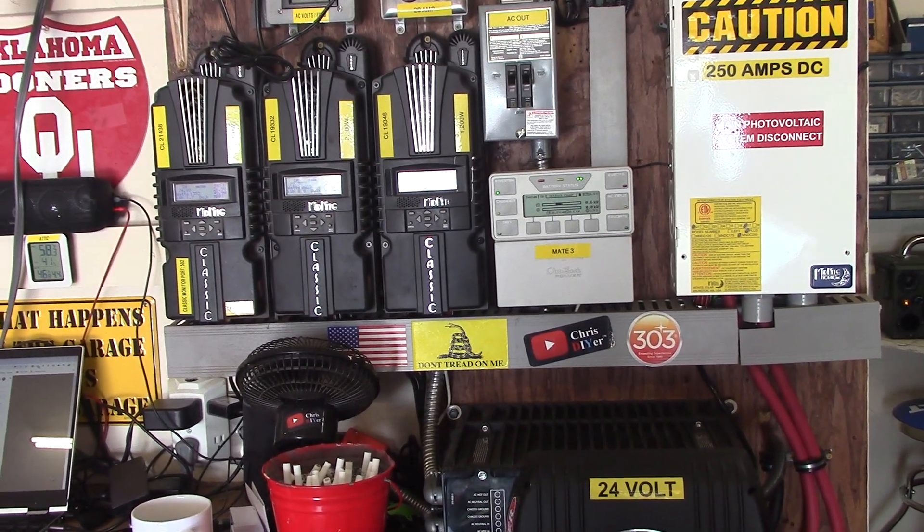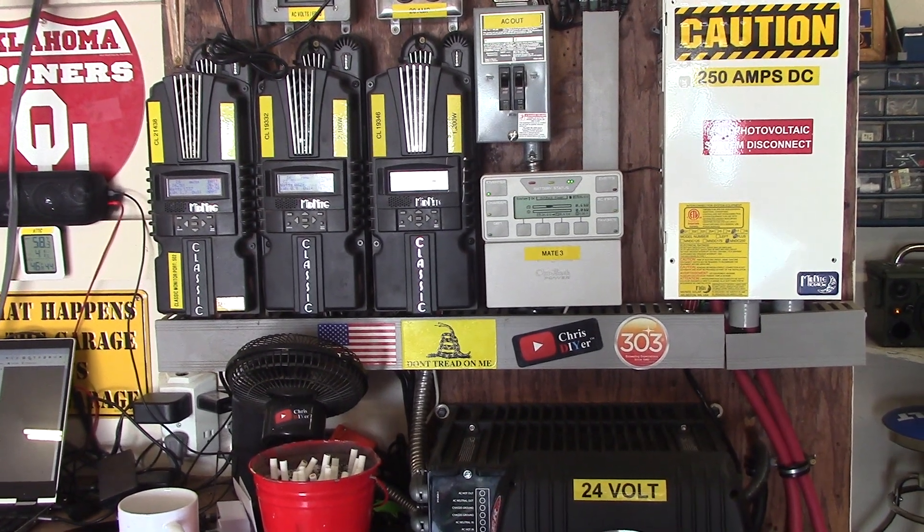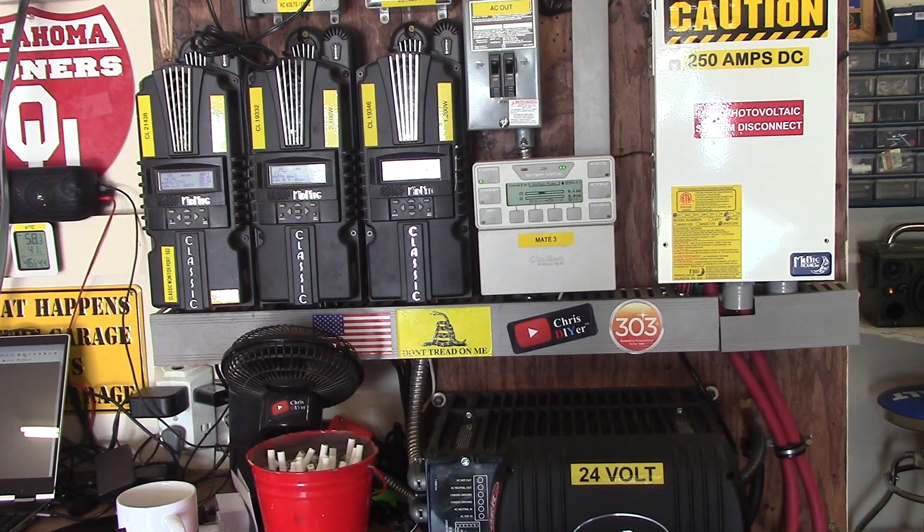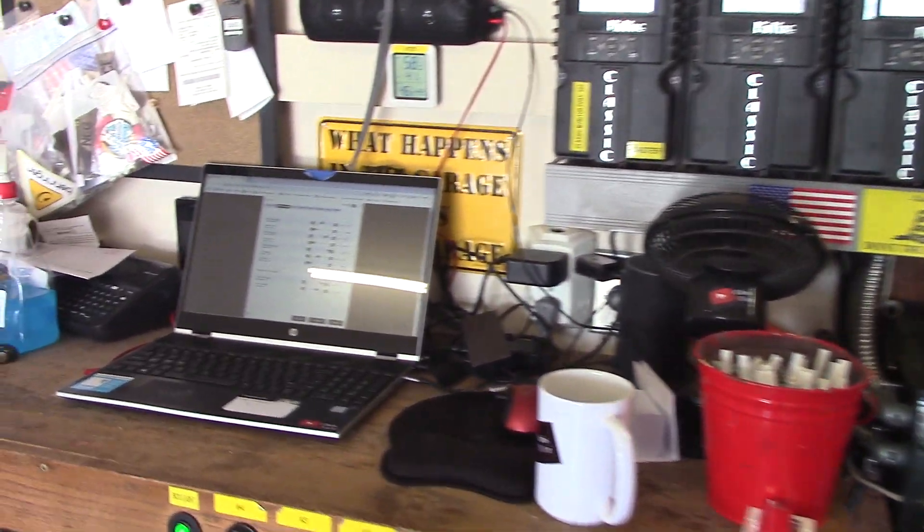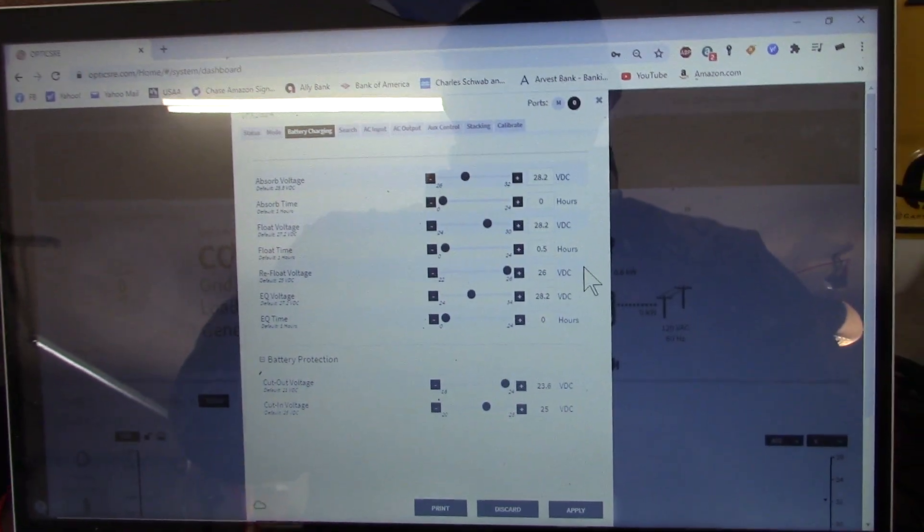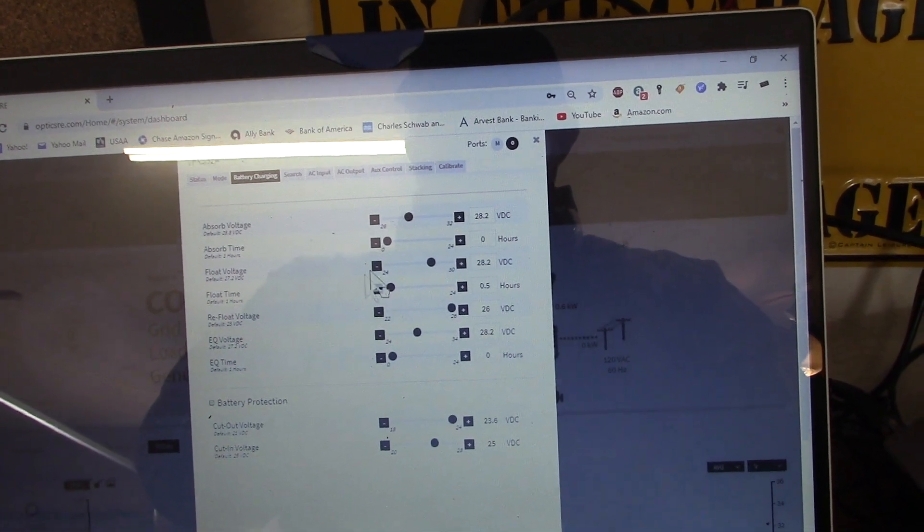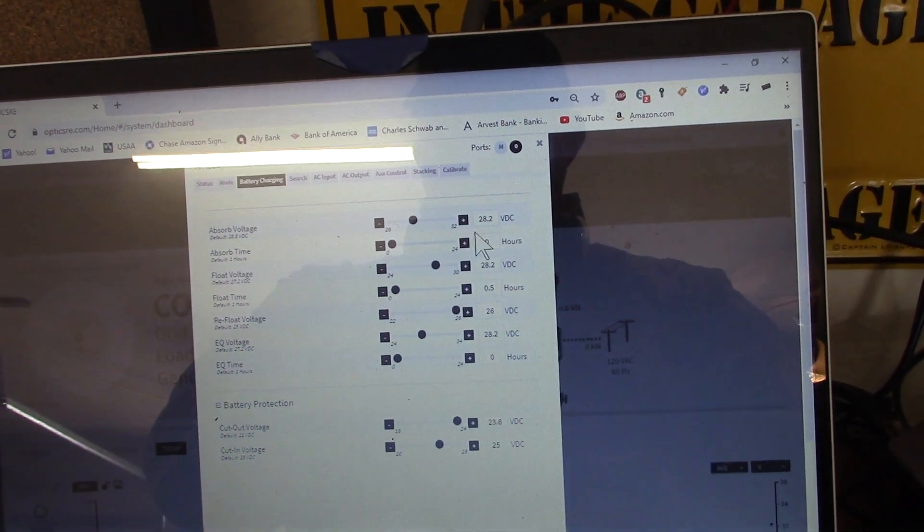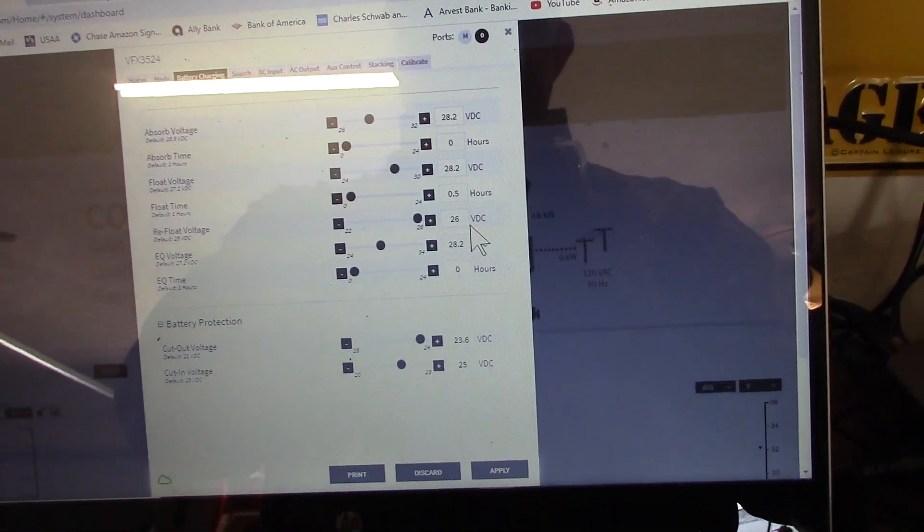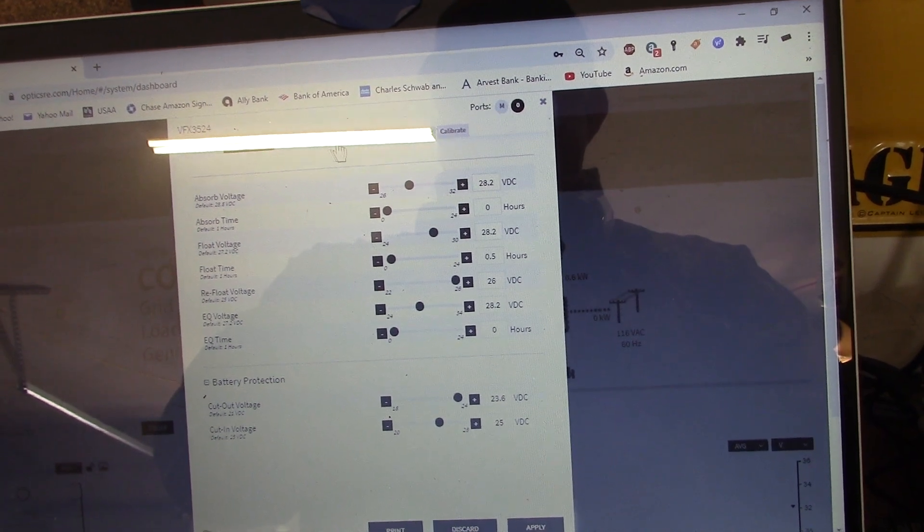But there's a setting in the Optics RE software that either I forgot about or I didn't set right or I didn't know. And you can set it up with your devices here. I'm gonna try to do this with one hand here. So I've got - this is the VFX 3524. I've got all the settings to where I want it for charging. 28.2 and then 26 for refloat. Right? And all was good.